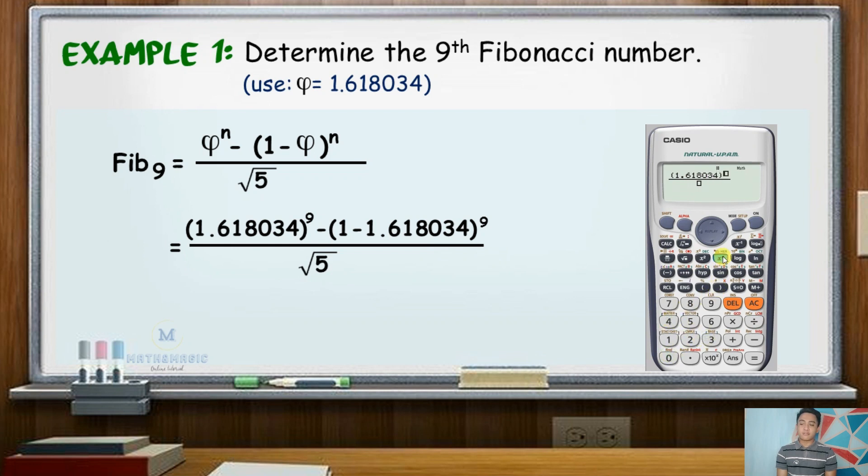Substitute the values in this formula: that will be quantity 1.618034 raised to 9 minus the ninth power of quantity 1 minus 1.618034, all over square root of 5. Calculating this will give a value that is approximately equal to 34.